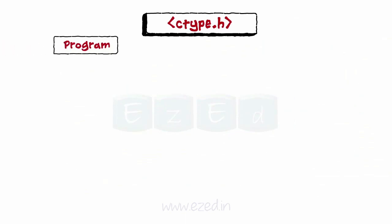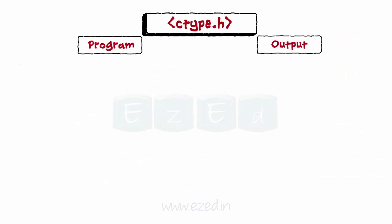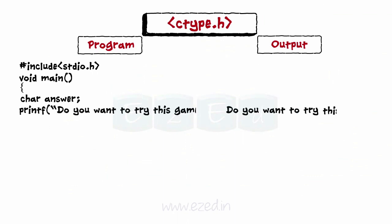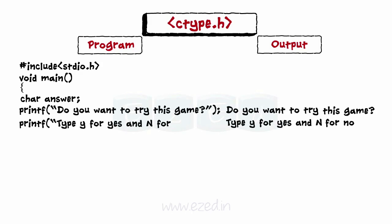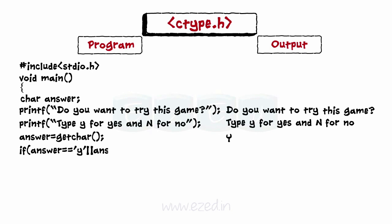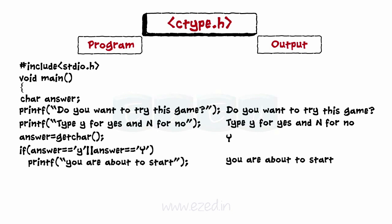Now we write a program to read a character. We start by declaring the main function followed by the variable answer. Then we ask the user to enter 'y' to start and 'n' to stop. The answer is scanned using the getChar function, after which we add an if condition which checks if the value of the answer is equal to 'y' or 'Y'. If yes, we prompt the user that we are about to start; else we print goodbye and end the function.